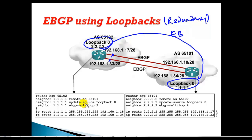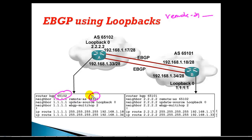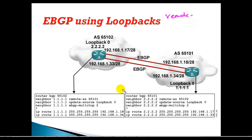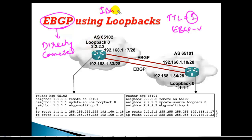These commands — remote-as and update-source — are the same as in iBGP using loopbacks. For eBGP, the remote-AS number will be different from our own AS. Additionally, for eBGP using loopbacks, we must add a third command: 'ebgp-multihop'. By default, the TTL value for every eBGP peer is only one hop, meaning eBGP neighbors must be directly connected. iBGP neighbors do not have this restriction.